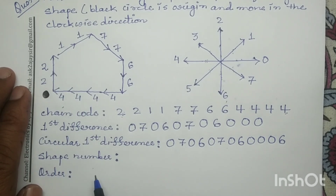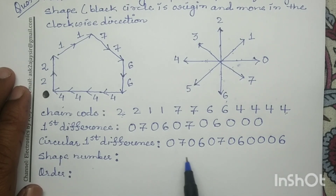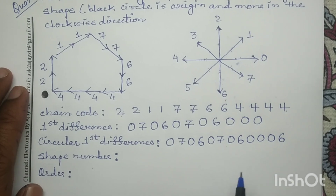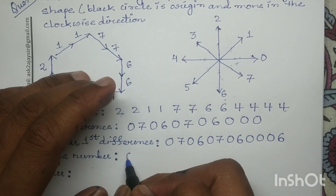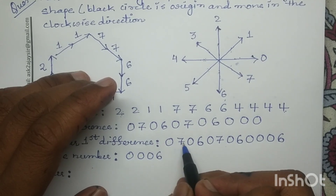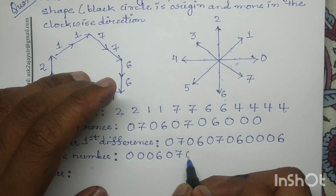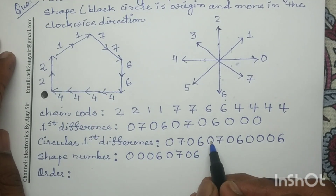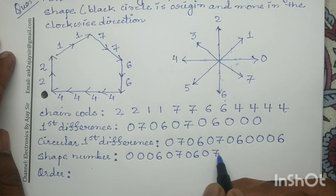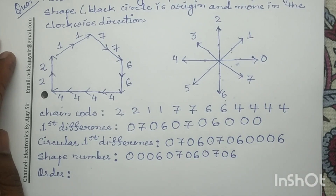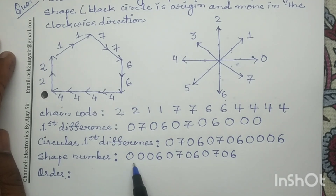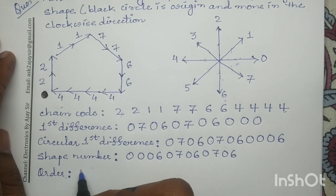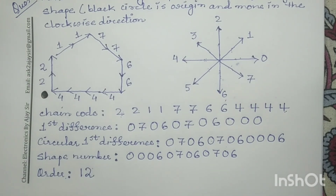To determine the shape number, we make the minimum magnitude number from the circular first difference. The minimum magnitude number becomes: 0 0 0 6 0 7 0 6 0 7 0 6. To find the order, we count the number of digits in this shape number: 1 2 3 4 5 6 7 8 9 10 11 12. So the order is 12. Thank you.